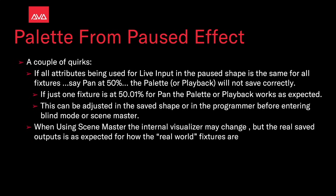A couple of quirks. If all attributes being used for live input in the paused shape are the same for all fixtures — say pan at 50% — the palette or playback will not save correctly. If just one fixture is at 50.01 for pan, the palette or playback works as expected. This can be adjusted in the saved shape or on the programmer before entering blind or Scene Master modes. When using Scene Master, the internal visualizer may change, but the real saved output is correct for how the real-world fixtures are.